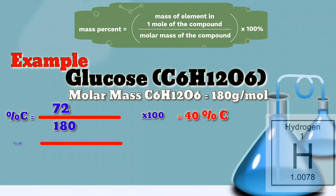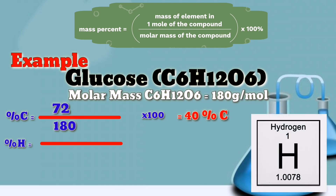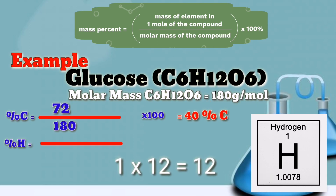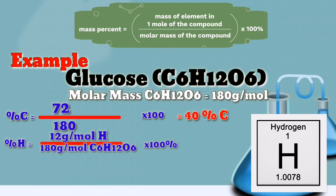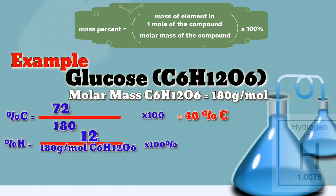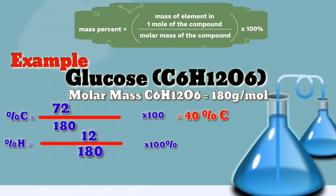For the percentage of hydrogen, the atomic weight of hydrogen is 1. Since we have 12 atoms, that is multiplied by 12, giving us 12 grams per mole of hydrogen. Divided by the molar mass of glucose, which is 180 grams per mole, times 100 percent. So 12 divided by 180 times 100 is 7 percent hydrogen.